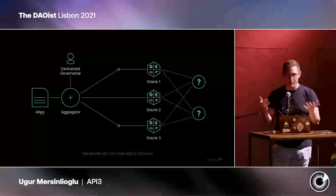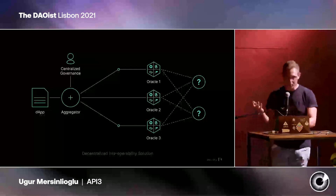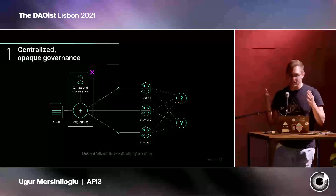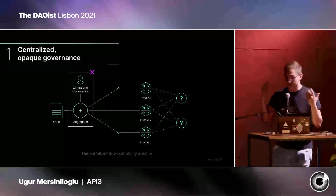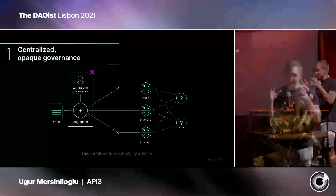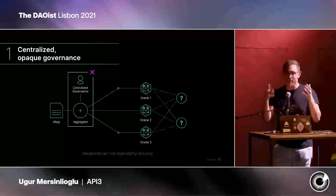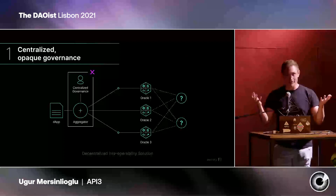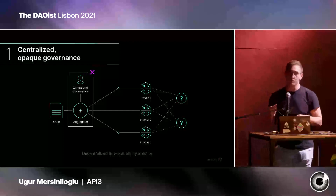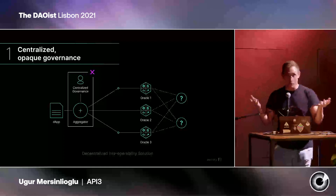DeFi as we know it couldn't exist without Oracles. But we believe there are certain issues with the current setup. The first issue is the entity that sets up the aggregation. While there can be hundreds of Oracles on the right side providing data, it's actually the entity that controls the aggregation contract that has the final say in what you consume, because they are the ones picking which Oracles are used for the Bitcoin price feed. There is no way for you as the data consumer to influence where you're getting your data from.